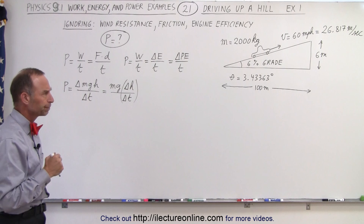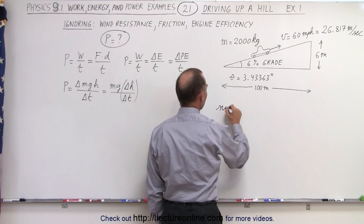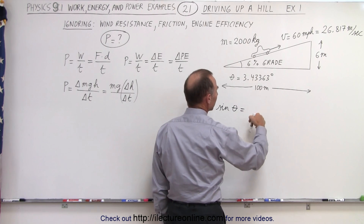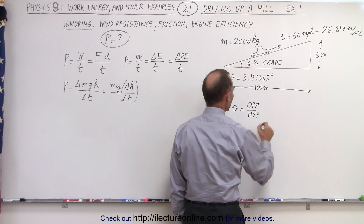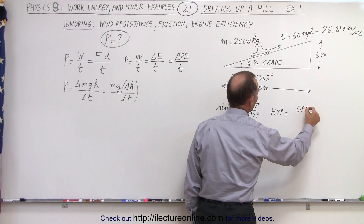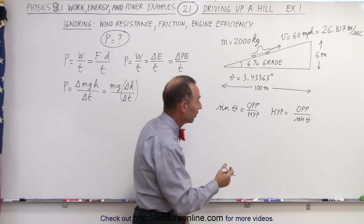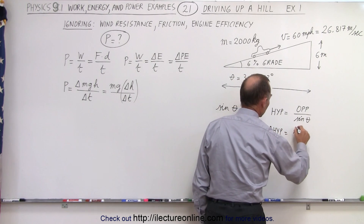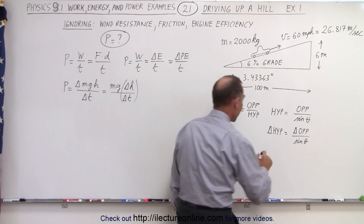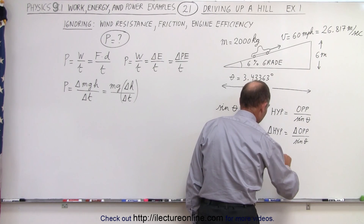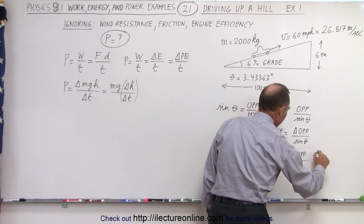How do we figure out the rate of height gain? There's a relationship between height gained and the speed of the car. The sine of angle theta equals the opposite side divided by the hypotenuse. So the hypotenuse equals the opposite side divided by the sine of theta, meaning the change in the hypotenuse is proportional to the change in the opposite side. Dividing both sides by delta t: the change in the hypotenuse over delta t equals the change in the opposite side over delta t, times 1 over the sine of theta.